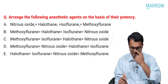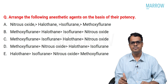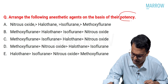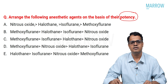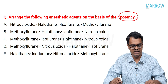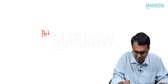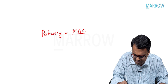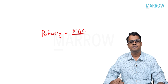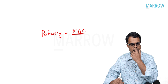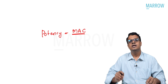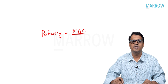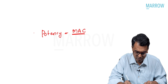The first question: arrange the following anesthetic agents on the basis of their potency. Basing on the potency that we have been constantly discussing, the potency of an inhalational anesthetic agent is determined by MAC — minimum alveolar concentration. The definition of MAC is the minimum amount of drug required to produce immobility in 50% of individuals.